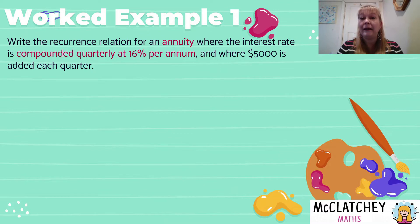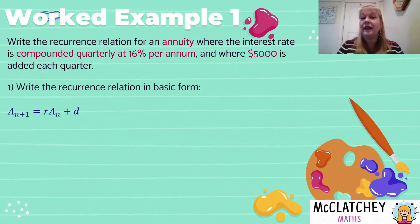It's also useful for finding how long it takes to get your annuity to a certain value. And we're going to talk about both of these ideas in this video. So let's look at our first worked example. We're going to write the recurrence relation for an annuity where the interest rate is compounded quarterly at 16% per annum and where $5,000 is added every quarter. Now we've got some key information here. Let's unpack that key information. I always love to follow Polya's plan for problem solving with worded questions.